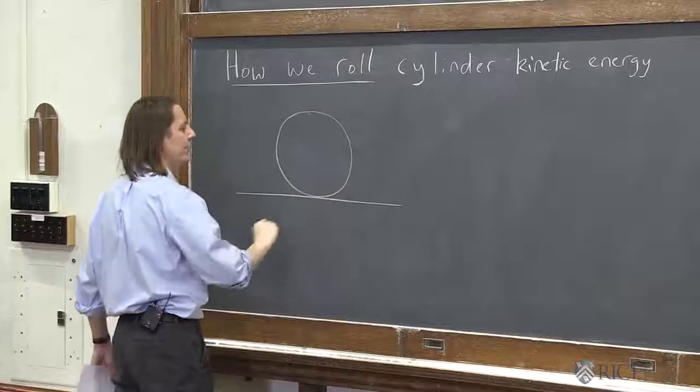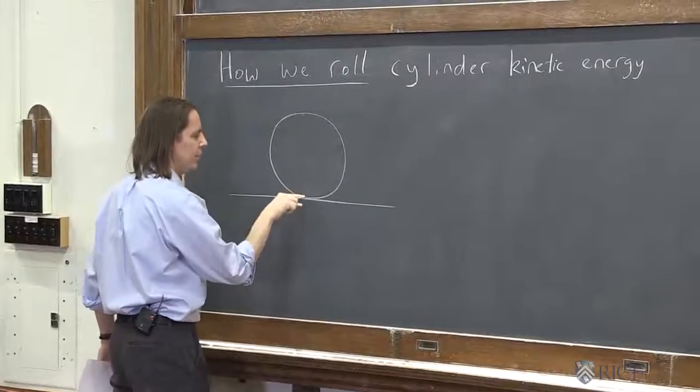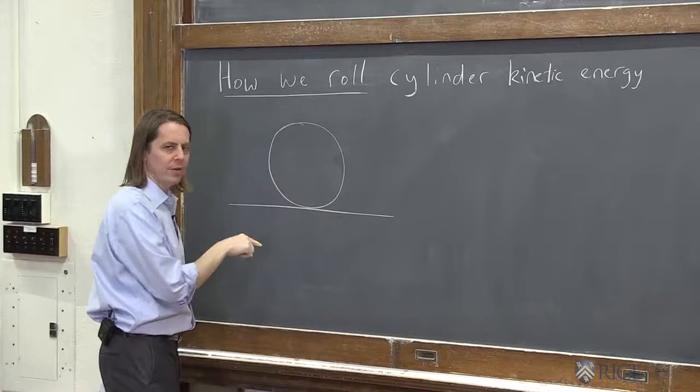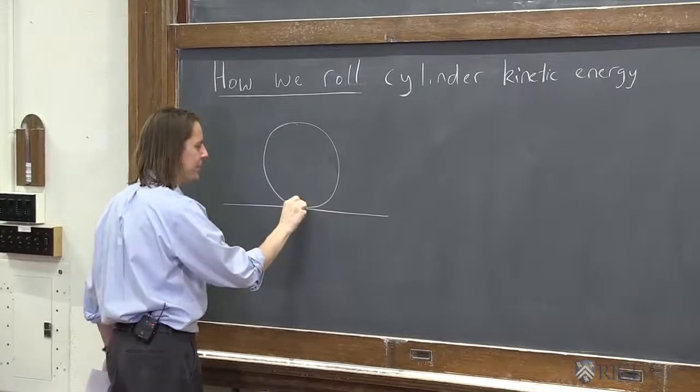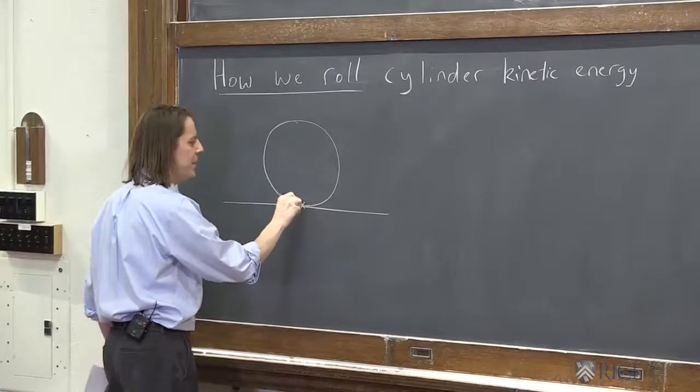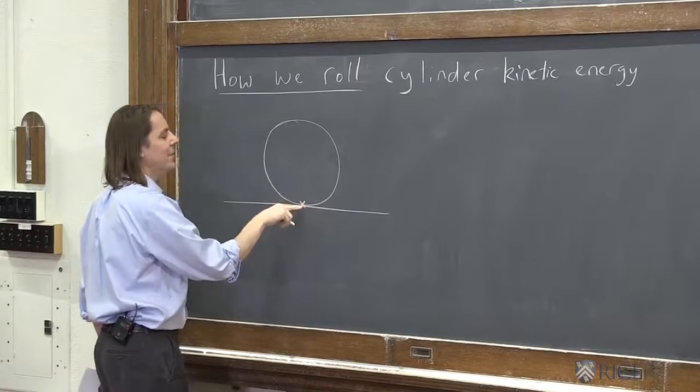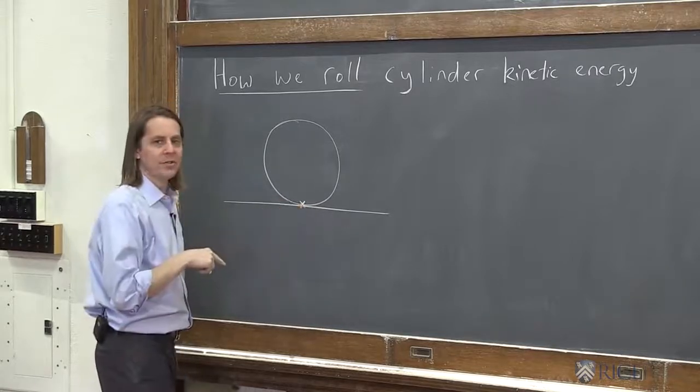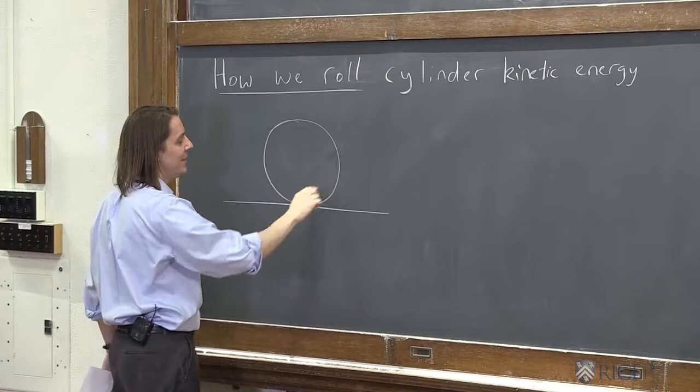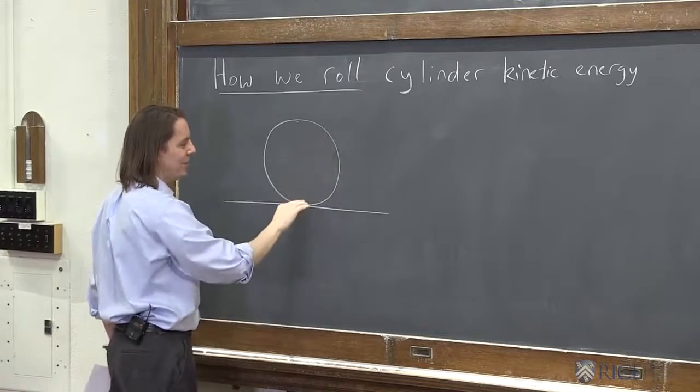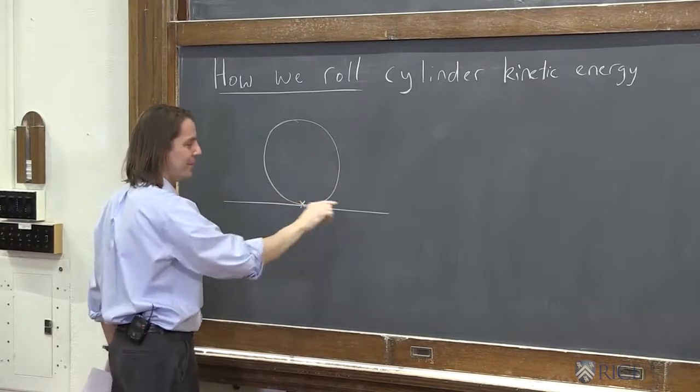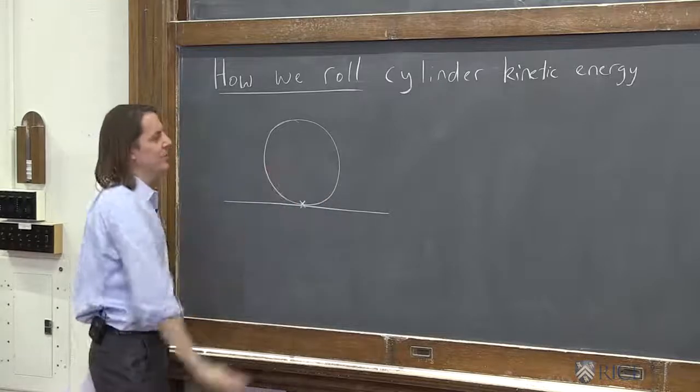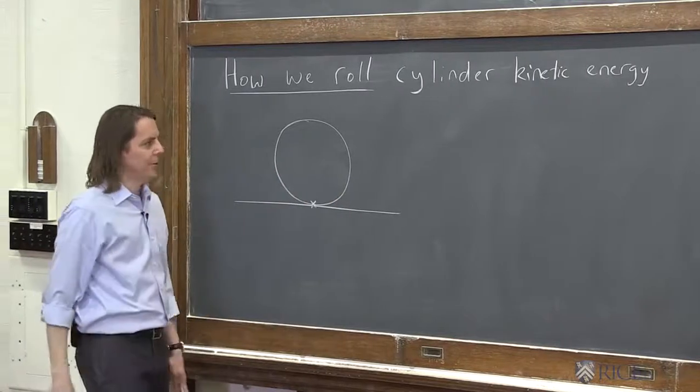So recall that we have a cylinder. It's rotating about this point where it's in contact. So I'll put an X there. That's the rotation axis. At any moment, whatever's there, that's the rotation axis. As it moves in time, that's always the rotation axis, but different parts of the cylinder are there, and it's in a different place. But in a snapshot, we can say it's rotating around that point.